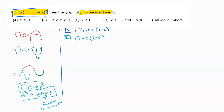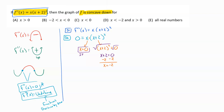We get x times (x plus 2) squared equals zero. The nice part is they already factored it for us. We split this up: whenever the left factor equals zero, that's a possible inflection point — so x equals zero. Then we solve the right side: square rooting both sides gives x plus 2 equals zero, and subtracting two gives x equals negative two. That's our second possible inflection point.